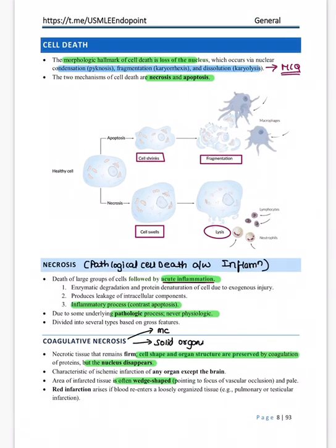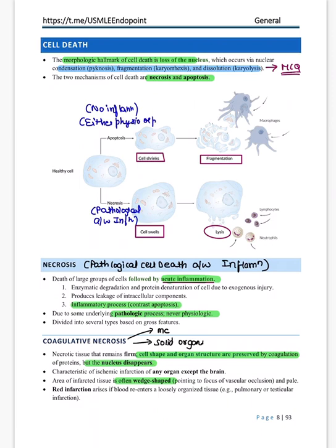Cell death can be either necrosis or apoptosis. Necrosis is pathological cell death associated with inflammation. Apoptosis has no inflammation and may be either physiological or pathological. A major difference: in apoptosis the cell shrinks in size, while in necrosis the cell swells in size and then lyses. Necrosis is always pathological; apoptosis can be physiological.